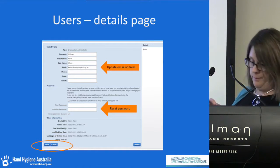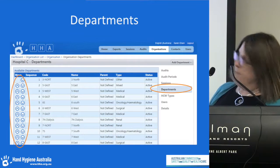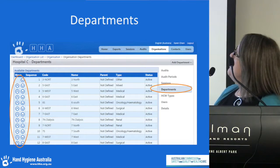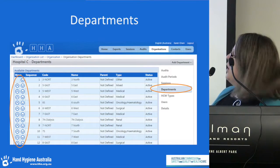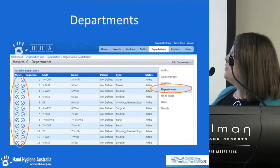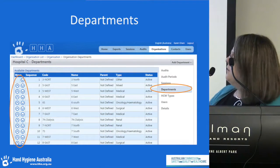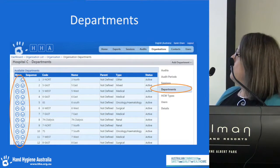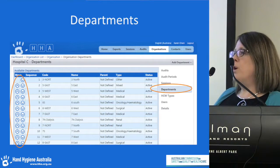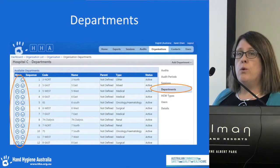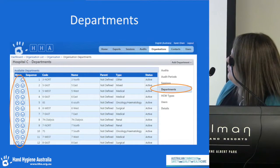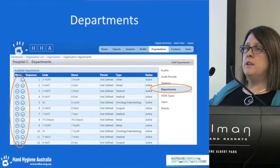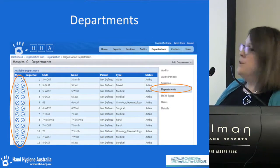Setting up and managing departments is one of the functions of an organisation administrator. Once you've clicked on the departments tab on the right, you'll see a list of your departments. With the new arrows on the left-hand side, you can reorder those departments however you'd like. The order you set will appear in the drop-down list when you're auditing and entering data. If it's a department you don't use often, you can move it to the bottom; if it's one you use frequently, move it to the top.